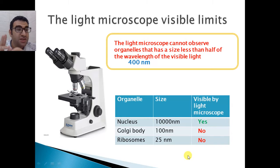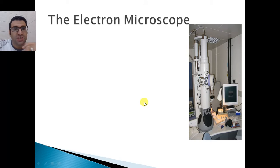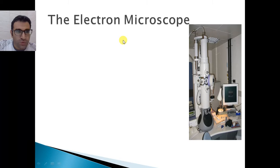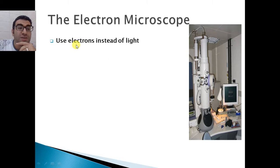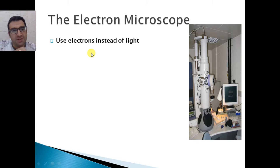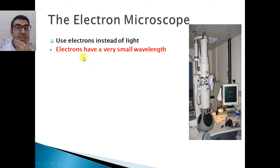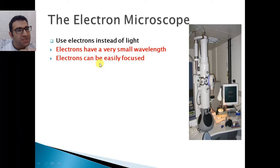So the light microscope has two limits: resolution limits and visible limits. The solution for those limits is using the electron microscope. The electron microscope has improved resolution and improved visualization because it uses electrons as a source of radiation instead of light — that is why the other is called the light microscope. The electrons have a very small wavelength and can be easily focused on the specimen.